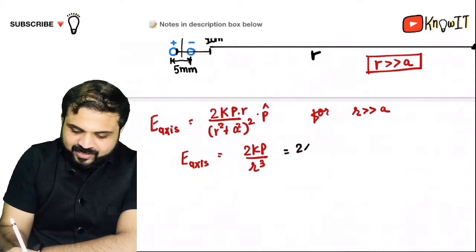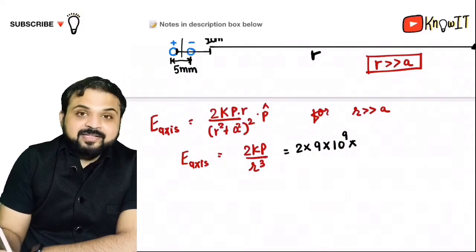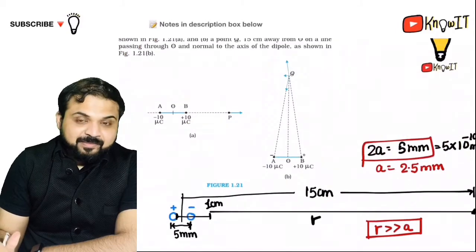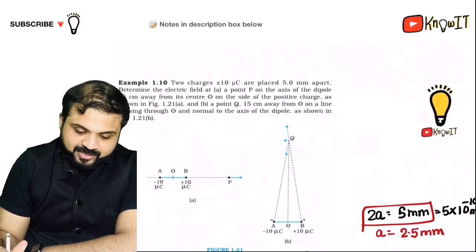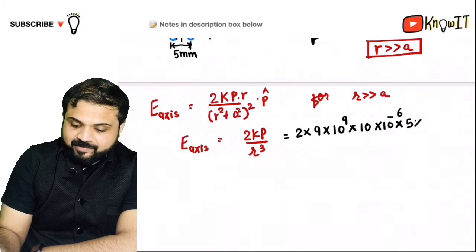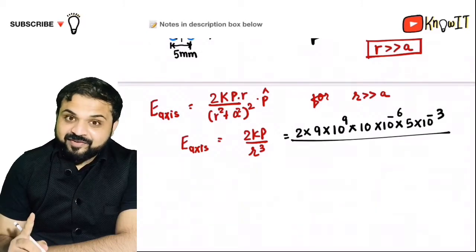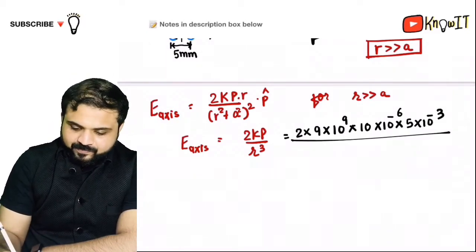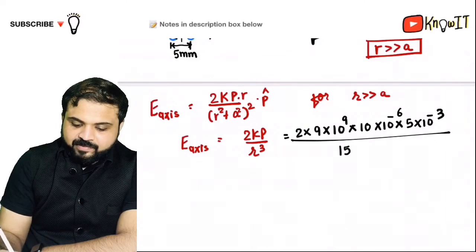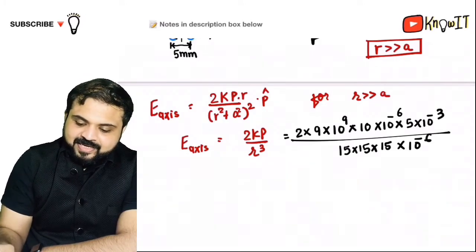Now substituting values: E_axis = 2 × (9×10⁹) × p / r³. The dipole moment p = q × 2a = 10×10⁻⁶ × 5×10⁻³. And R = 15 cm = 15×10⁻² m, so r³ = 15³ × 10⁻⁶. The 10⁻⁶ in the numerator and 10⁻⁶ in the denominator cancel out.